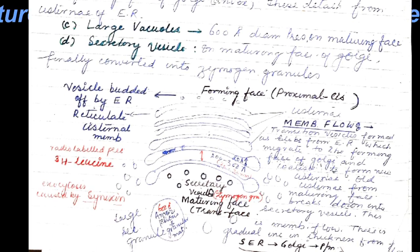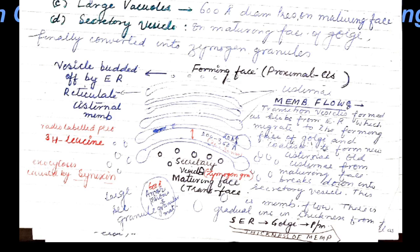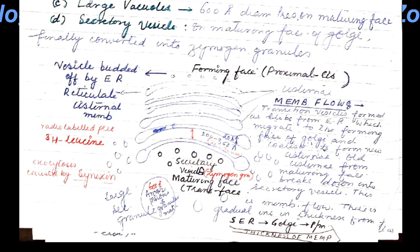At the M face, looking at a slide you can see how Golgi bodies appear. At the top is the proximal face, also called the cis face or forming face, where vesicles budded off by endoplasmic reticulum coalesce to form cisternae. We know membrane flows by radiolabeling with tritiated leucine (3H leucine). Transition vesicles form as blebs from endoplasmic reticulum and migrate towards the maturing M face.